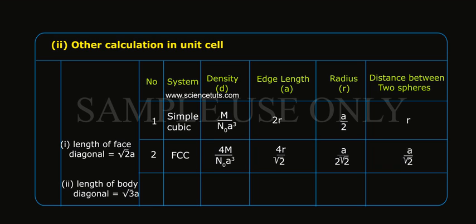Length of body diagonal equals root 3a. Number 3, System BCC, density d equals 2M by N₀a³, edge length a equals 4R by root 3, radius R equals root 3a by 4, distance between two spheres equals root 3a by 2.